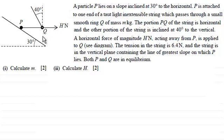smooth ring Q of mass m kilograms. The portion PQ of the string is horizontal and the other portion of the string is inclined at 40 degrees to the vertical. A horizontal force of magnitude H newtons acting away from P is applied to Q. The tension in the string is 6.4 newtons, and the string is in the vertical plane containing the line of greatest slope on which P lies. Both P and Q are in equilibrium.